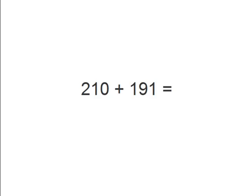Alright, now we have the problem 210 plus 191. Let's find a different way to solve this problem. So this time we're going to break up the number into 200 and 10. And for the 191, we'll make it 100, 90, and then 1. Okay, so let's start adding these numbers up.